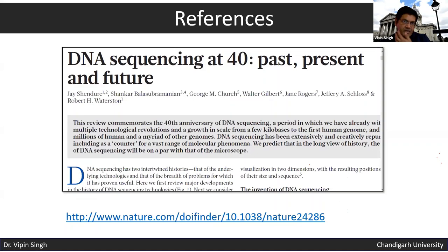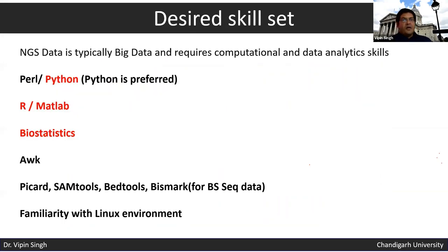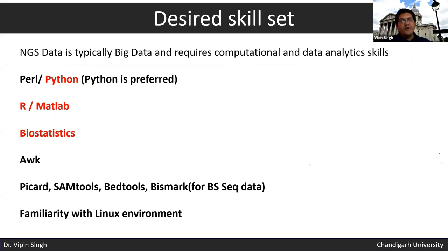The reference on DNA sequencing at 40 — past and future — is a very nice read. It notes that initially sequencing one very small segment of DNA took three months, whereas now we can sequence the entire human genome in less than half a day. Today, sequencing is mostly outsourced to companies or CROs as it is a very standard practice.